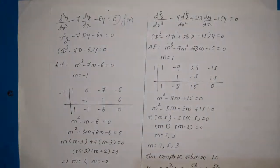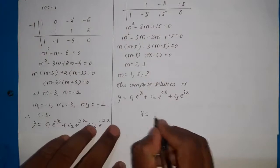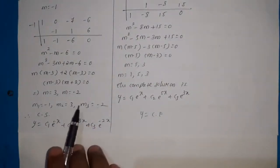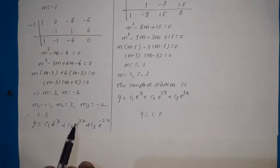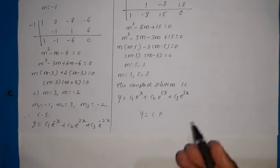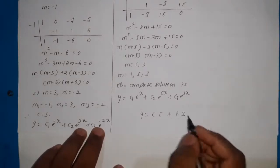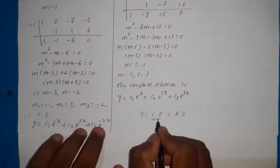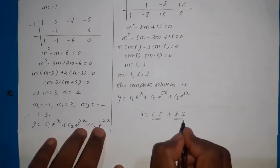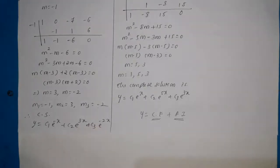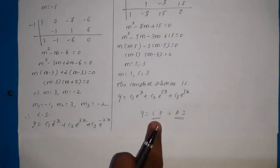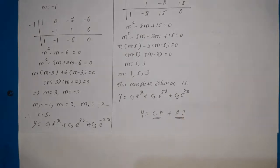Depending on that function, we are going to find the particular integral. Now y equals complementary function — whatever we write depending on the roots — is called the complementary function. It is not equal to y alone; we must add the particular integral. The complementary function depends on the roots of the auxiliary equation, and the particular integral depends on the function on the right-hand side. The sum of these two gives the complete solution.